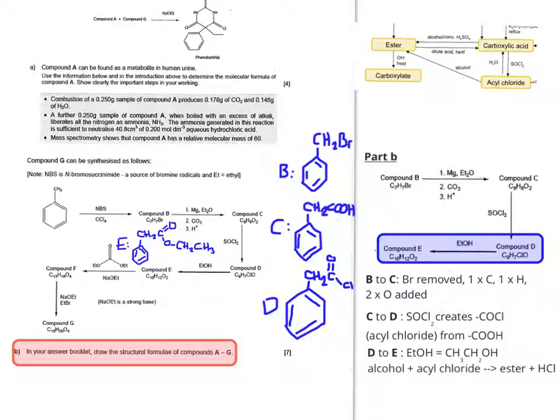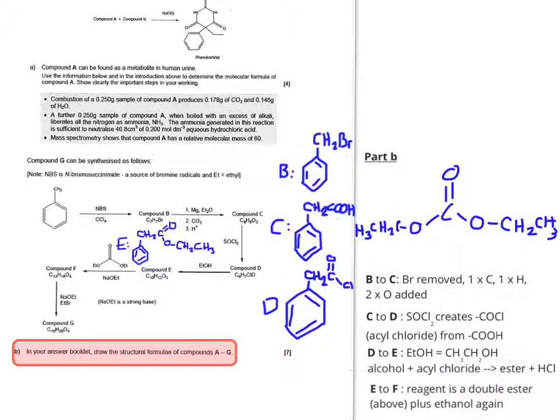What we've got going from compound E to compound F is an interesting one. The reagent we've got here is a double ester plus ethanol. Look at compound F. You have three extra carbons, four extra hydrogens, but two less oxygens.